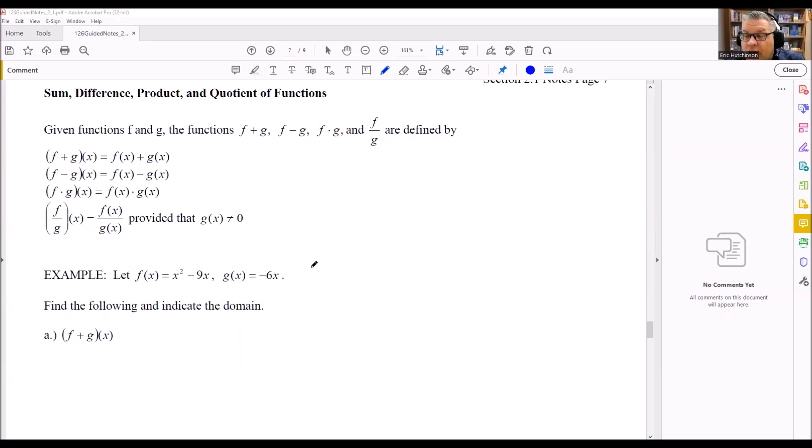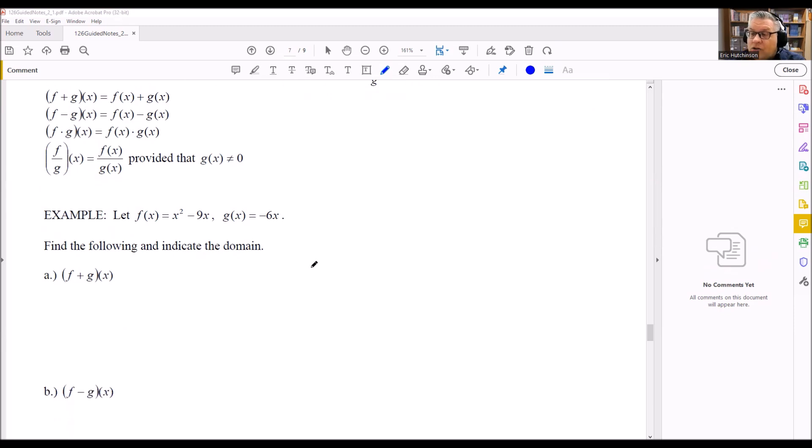So we're going to take a look at this first example here. We've got f of x and g of x are given, and we want to do this one, f plus g of x. So we're going to follow what it tells us to do here. It says that this is f of x plus g of x.